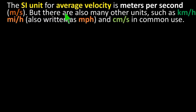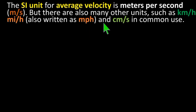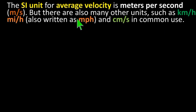The SI unit for average velocity is meter per second. But there are also many other units such as kilometer per hour, mile per hour (also written as MPH), and centimeter per second in common use.